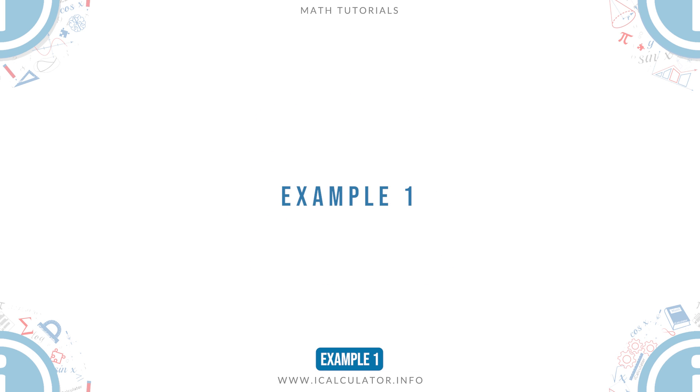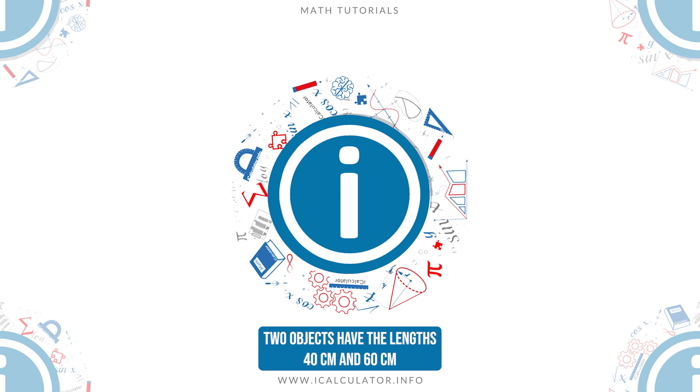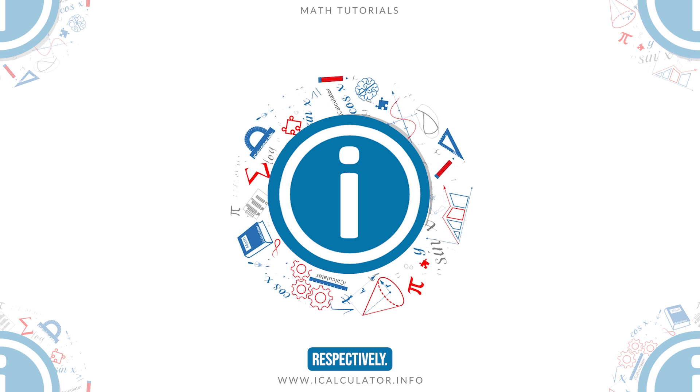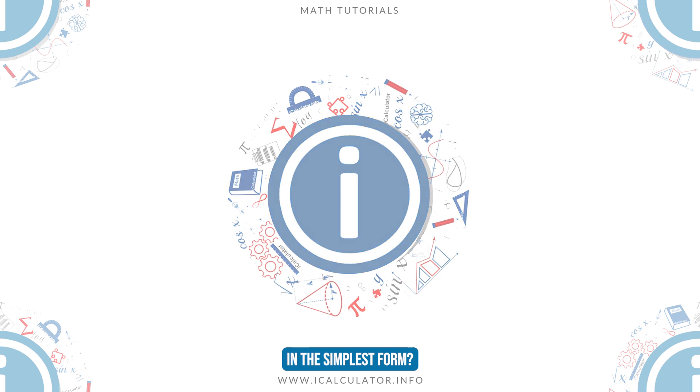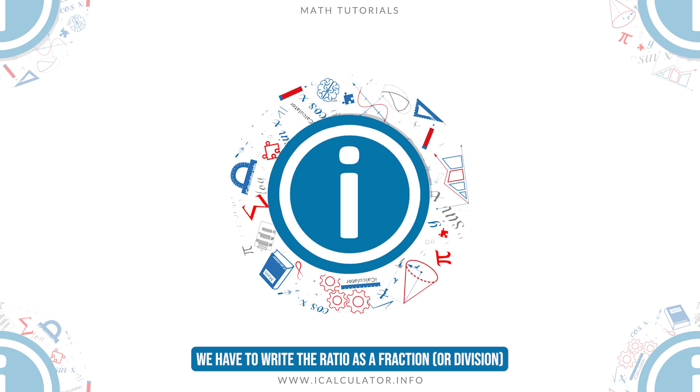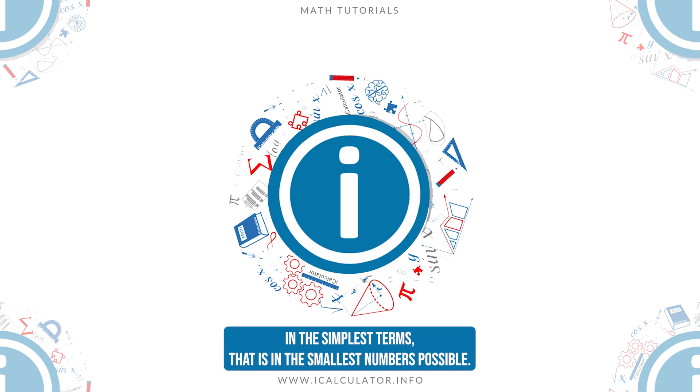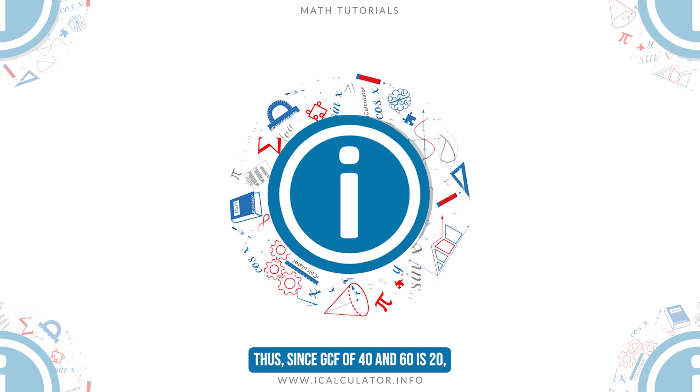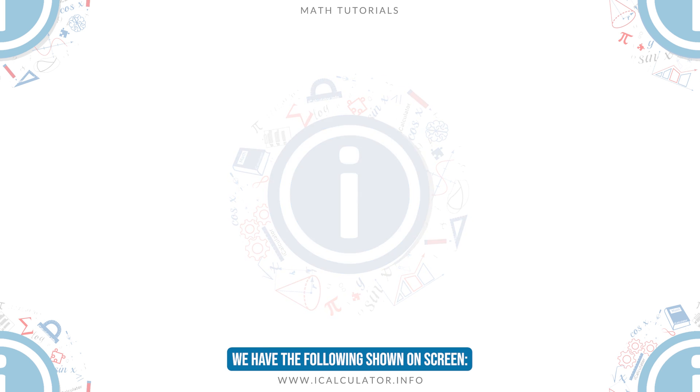Example 1. Two objects have the lengths 40 cm and 60 cm respectively. What is the ratio of their lengths expressed in the simplest form? We have to write the ratio as a fraction in the simplest terms, that is in the smallest numbers possible. Thus, since GCF of 40 and 60 is 20, we have the following shown on screen.